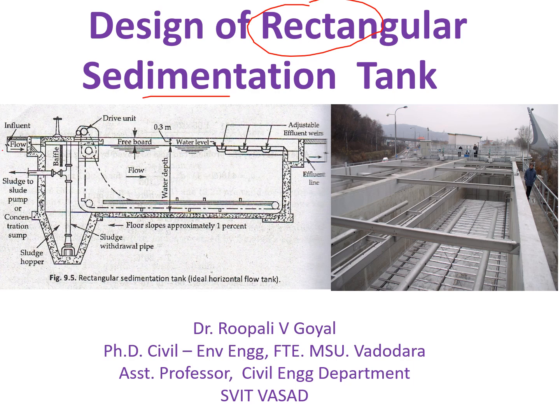This is your influent and this is your effluent, and the sludge settle down will be collected at this hopper and it will be collected through this sludge withdrawal pipe. Here this baffle wall is provided just to have the uniform velocity of flow. So in this direction whatever velocity is there is called horizontal velocity, and the settling velocity is vertical.